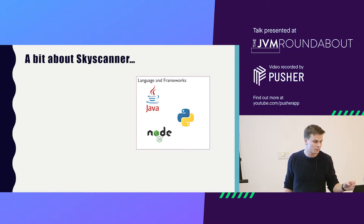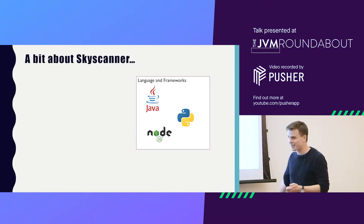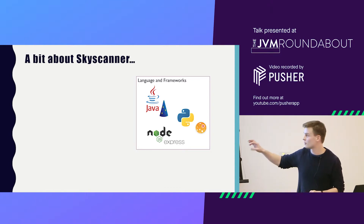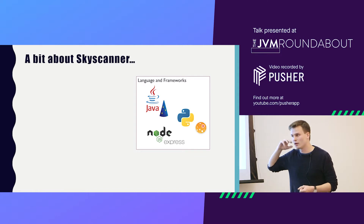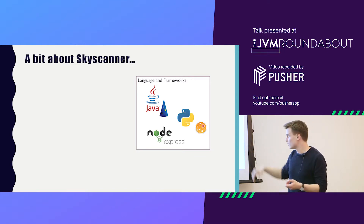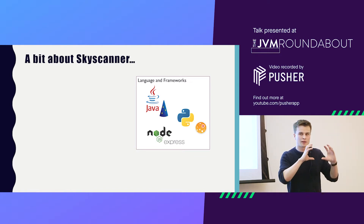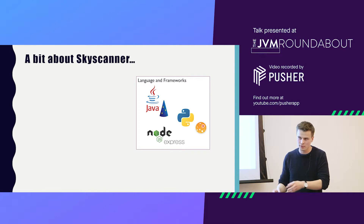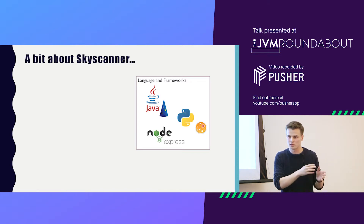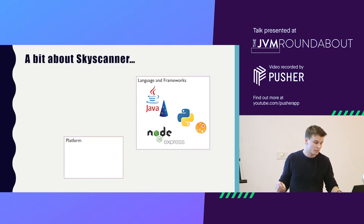A bit about Skyscanner's tech stack. Java features pretty heavily at Skyscanner, along with Python and Node. For each of those there's a main supported framework — for Java we use DropWizard, Python uses AIO HTTP, and Node uses Express. The idea is to try and keep all of our microservices looking a very similar shape, which keeps the problems people encounter similar, making it easier to solve those at scale rather than solving them in many different ways.